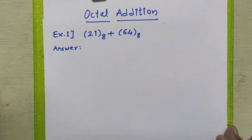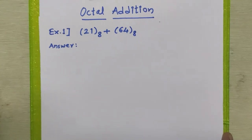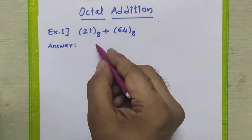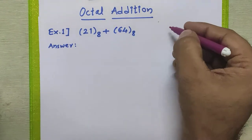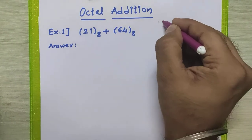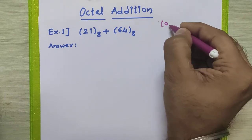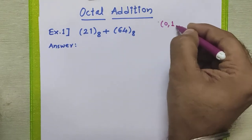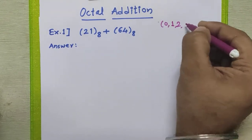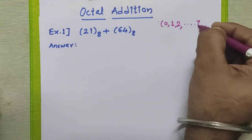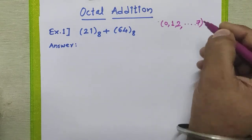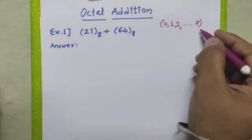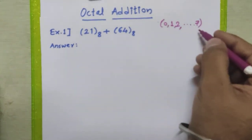As we know, the base of the octal number system is 8, so the valid digits for the octal number system are 0 to 7. It means the last valid digit for this number system is 7.